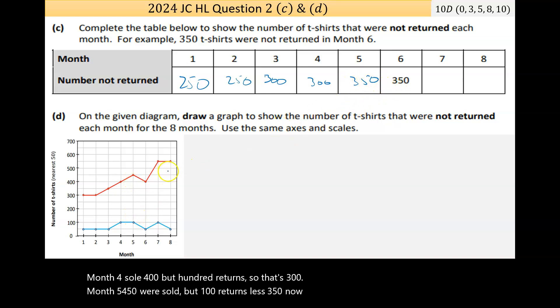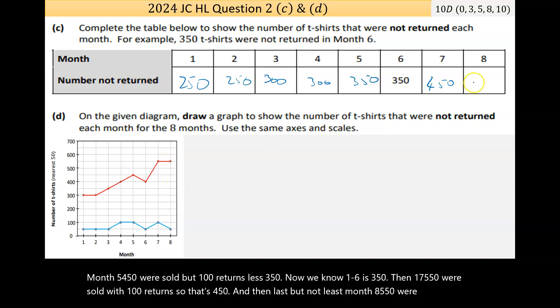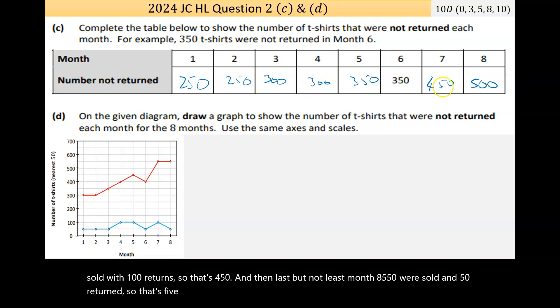We know month 6 is 350. Then month 7, 550 were sold but 100 returned, so that's 450. And month 8, 550 were sold and 50 returned, so that's 500. A nice steady increase. Now on the given diagram, draw a graph to show the number of t-shirts that were not returned for each month. So this is your 250 for month 1, 250 for month 2, then it goes up to 300, stays at 300, then 350, 350, 450, and 500.